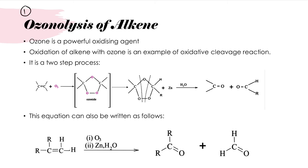The first one is ozonolysis of alkene. We know that ozone is a powerful oxidizing agent, and the oxidation of alkene with ozone is an example of oxidative cleavage reaction. This involves two steps, and the equation can be written as follows.